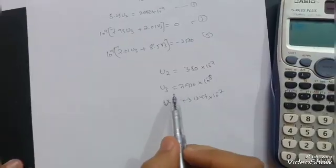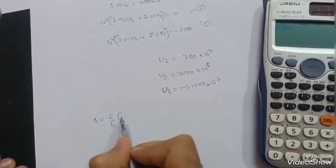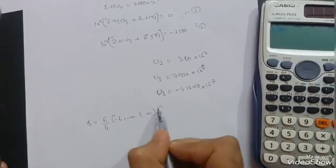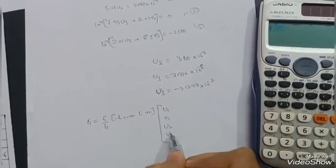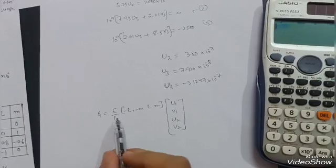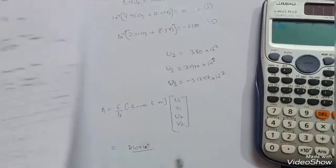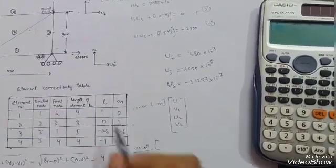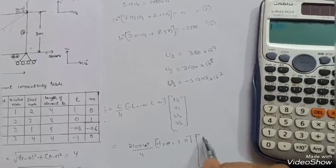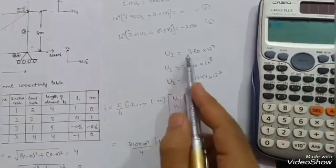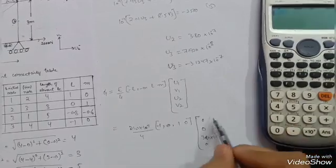These are the nodal displacements. Now calculate the stresses. Sigma 1 = (E / L1) × [−l, −m, l, m] × [u1, v1, u2, v2]. For element 1: E = 210×10⁹, L = 4, l = 1, m = 0. u1 = 0, v1 = 0, u2 = 3.80×10⁻⁷, v2 = 0.